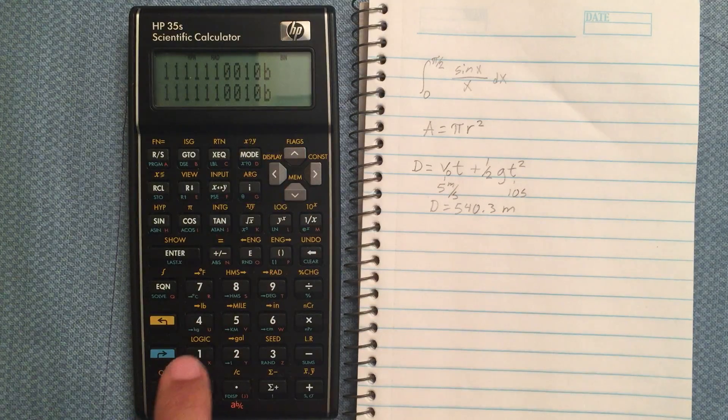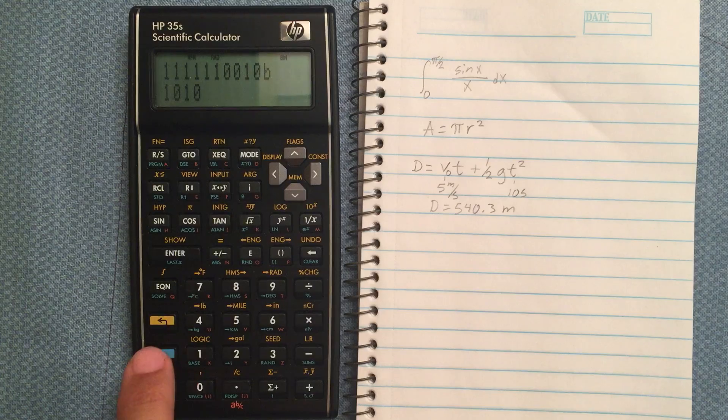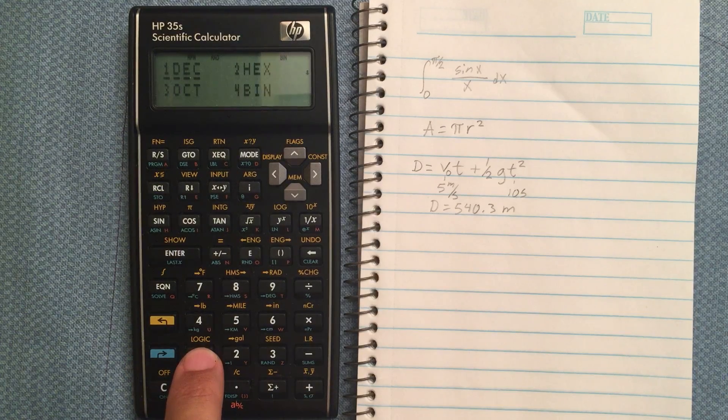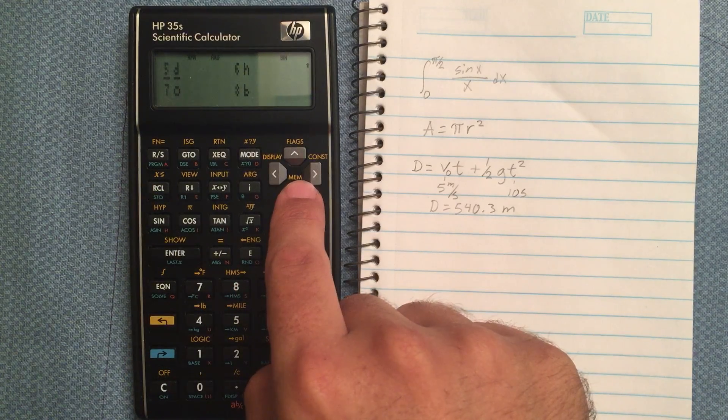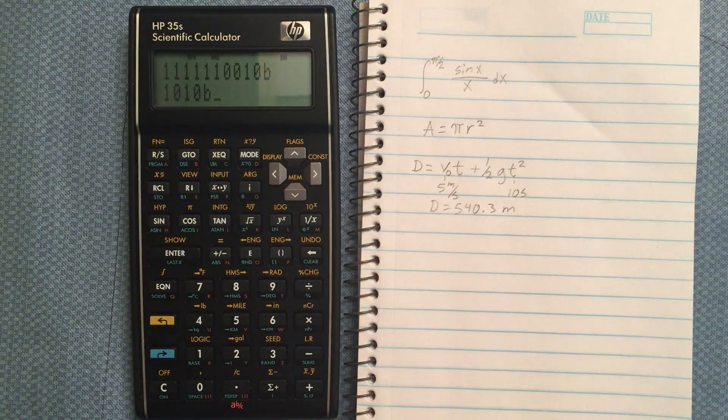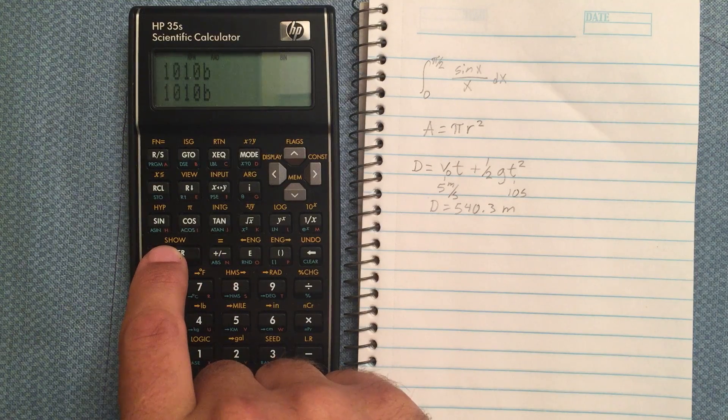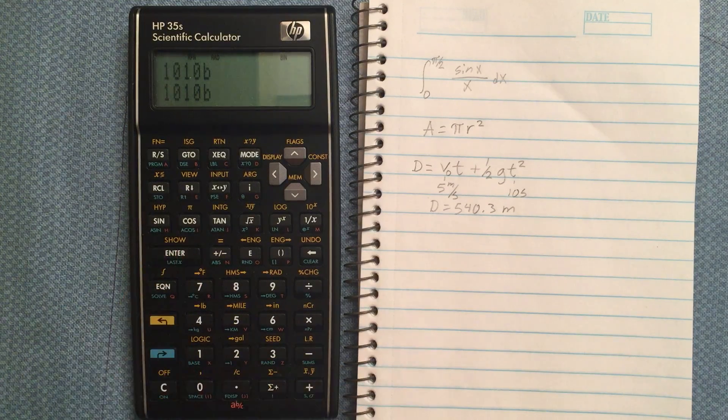Let's say I wanted to enter it in binary though. Now I do 1, 0, 1, 0, then go to base. I have to scroll down, and there's the B for binary. And now if I hit enter, it realizes that that's in binary and leaves it as it was.